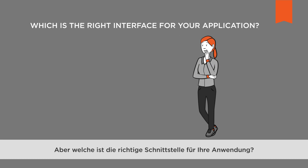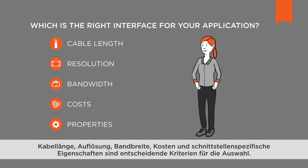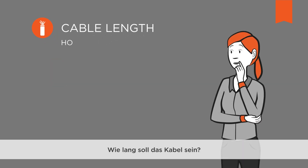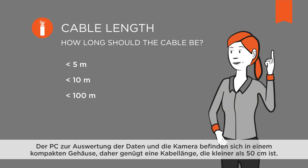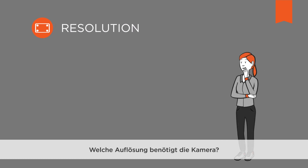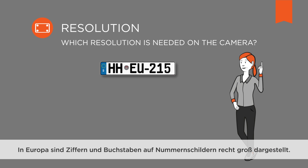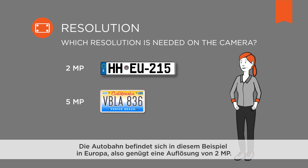Which is the right interface for this application? Cable length, resolution, bandwidth, costs, and interface-specific properties are the crucial criteria for selection. For this solution, the camera and embedded PC for processing the data are placed in one compact housing, meaning that a cable length of just 50 centimeters is enough. In Europe, the numbers and letters on license plates are printed quite large, so 2 megapixels of resolution are enough. In the USA, by contrast, 5 megapixels are typically needed since the numbers and letters are smaller. The highway in this case is in Europe, so 2 megapixels are enough.